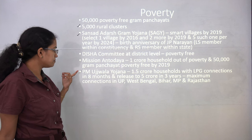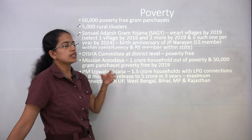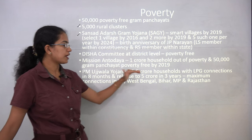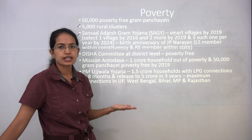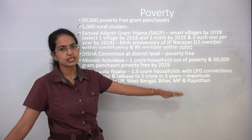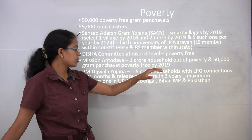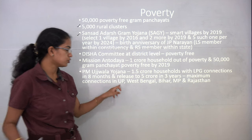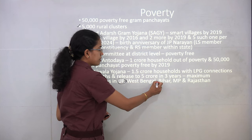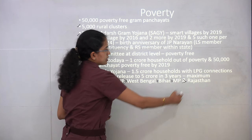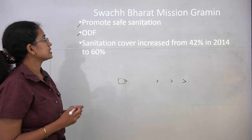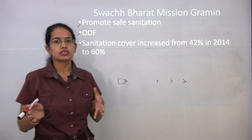Mission Antodaya aims at removing poverty from households and making regions poverty-free by 2019. PM Ujjwala Yojana talks about providing LPG connections; nearly 1.5 crore households have already been provided LPG connections, with a target of 5 crore people in the next three years. The maximum connections have been done in UP, followed by West Bengal, Bihar, Madhya Pradesh, and Rajasthan.